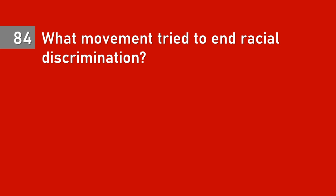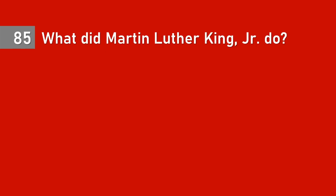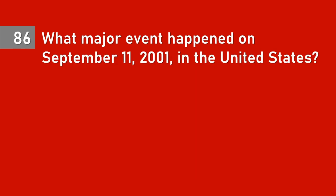Question 84: What movement tried to end racial discrimination? The civil rights movement. Question 85: What did Martin Luther King Jr. do? Fought for civil rights; worked for equality for all Americans.